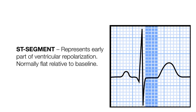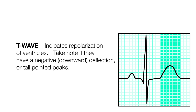Next, look at the ST segment, which represents the early part of ventricular repolarization. It's normally flat relative to the baseline. The T wave indicates repolarization of the ventricles — take note if they have a negative or downward deflection, or tall pointed peaks.